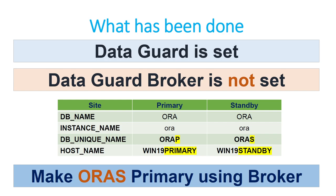The Data Guard is already set up, but the Data Guard Broker is not yet configured. The current setup has AuraP as the unique name on the primary hosted on Win19Primary, and AuraS as the standby hosted on Win19Standby. We will set up the Data Guard Broker and use it to perform a switchover, making AuraS the primary. That is our end goal.